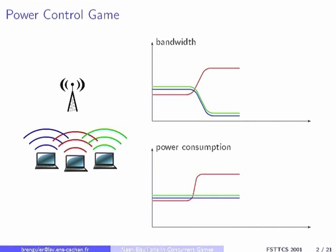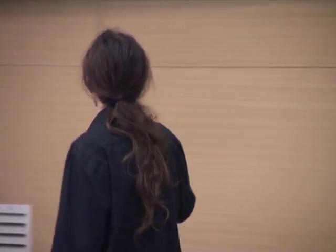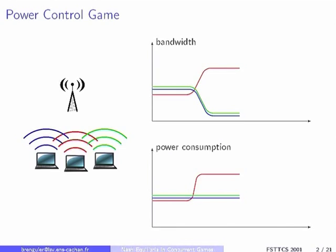The other users connected to the same antenna are not happy. What they can do is react by doing the same thing the red laptop just did. Then you see the bandwidth is roughly the same as in the beginning, but they are all using more power. That's bad because your battery is going down, so the situation is worse than in the beginning. That's one thing we would like to avoid.